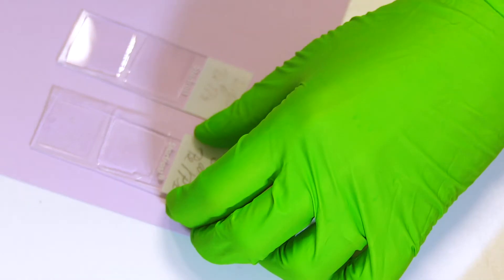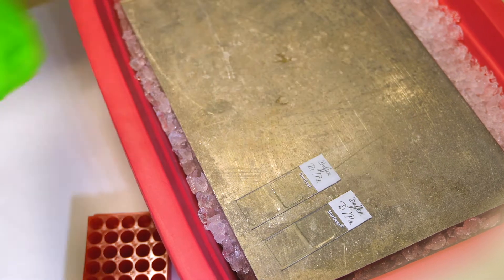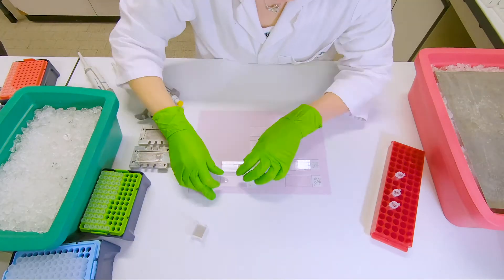Whenever one slide is ready, just transfer it to the cold metal plate to settle the gel. Then continue preparing the rest of the slides.